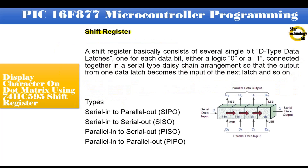A shift register basically consists of several single-bit D-type data latches, one for each data bit — either a logic 0 or a 1 — connected together in a serial daisy-chain arrangement so that the output from one data latch becomes the input of the next latch and so on. Types of shift registers include: serial in parallel out, serial in serial out, parallel in serial out, and parallel in parallel out.